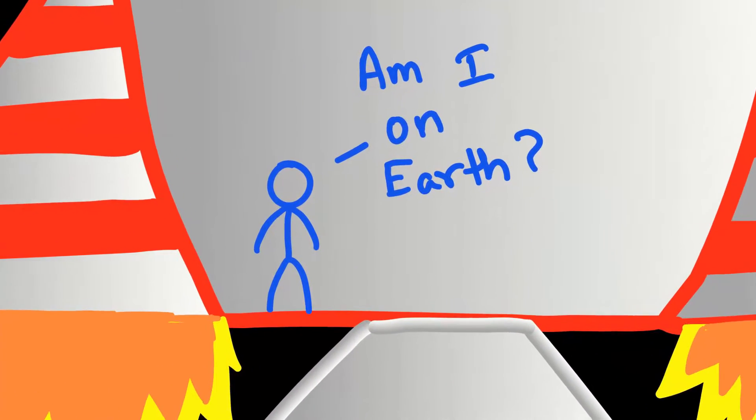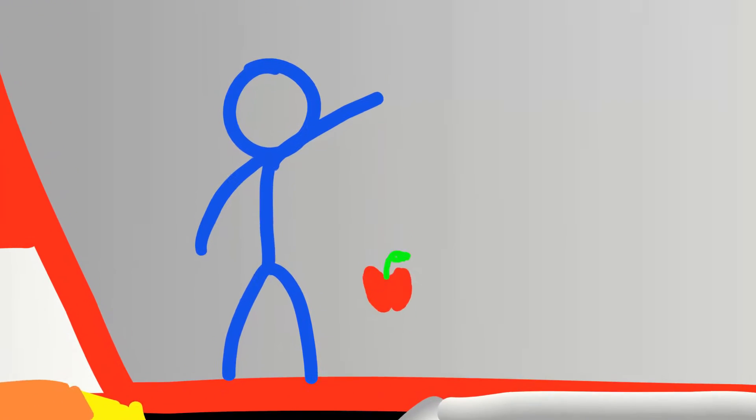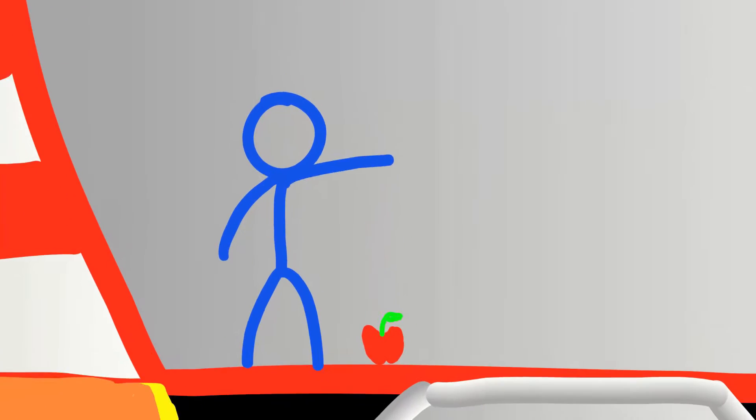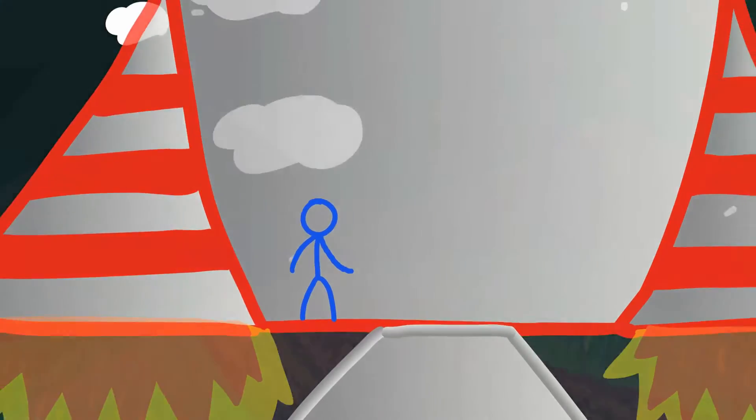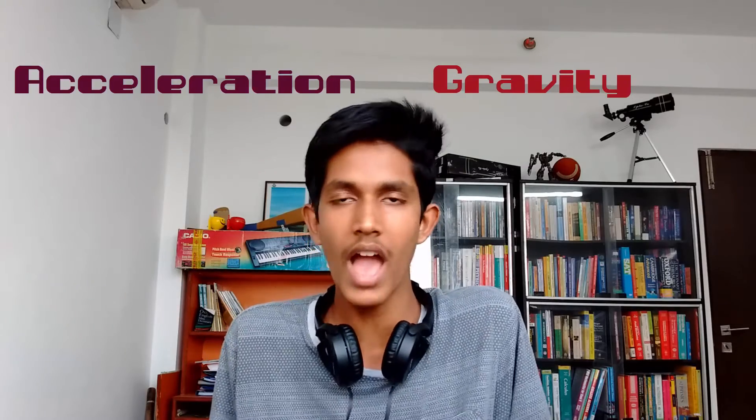So to test that theory, he holds out an apple and lets it go. It simply drops to the floor. So Sal now doubts whether he really is in an accelerating rocket or if he is standing right on Earth. Basically, this simple experiment proved that one cannot tell the difference between acceleration and gravity. And this is called the principle of equivalence.